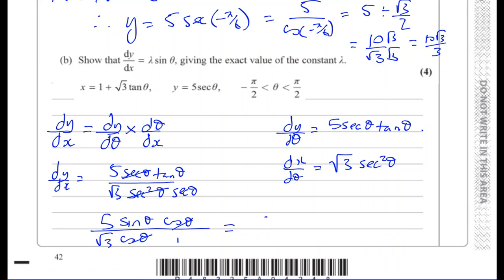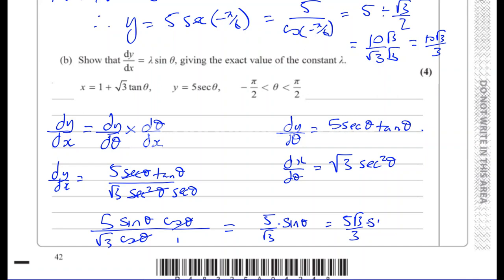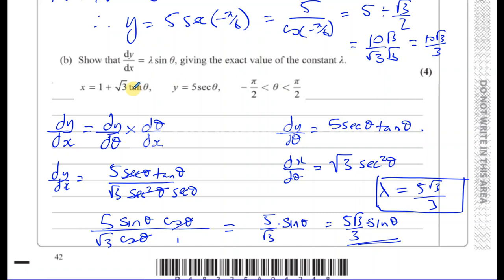That equals 5 over root 3 times sine theta, which, rationalizing the denominator by multiplying top and bottom by root 3, gives 5 root 3 over 3 times sine theta. So lambda equals 5 root 3 over 3.